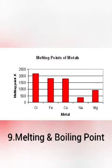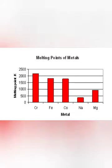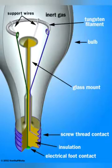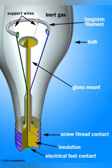Next is melting and boiling point. Except mercury, all other metals have high melting and boiling points. Tungsten is a metal used as the filament in electric bulbs because of its very high melting point.